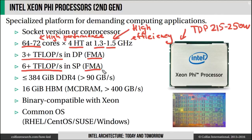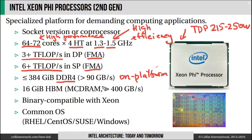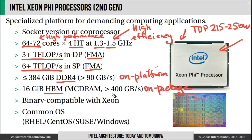These processors have access to two types of memory. First, the regular on-board memory based on DDR4 technology — the on-platform memory — which can deliver over 90 gigabytes per second of streaming bandwidth. The second kind is high-bandwidth memory, fused directly on the chip as on-package memory. Based on the novel MCDRAM technology, it can deliver bandwidth in excess of 400 gigabytes per second.